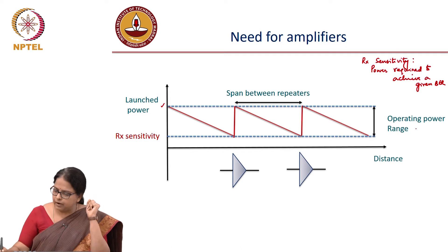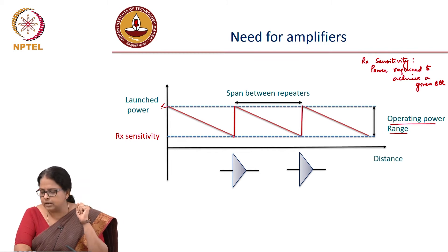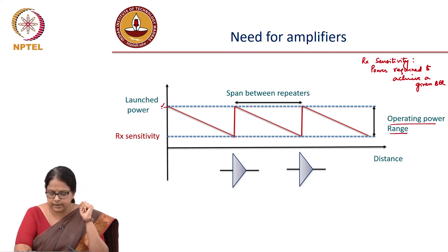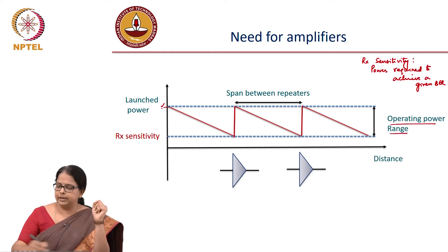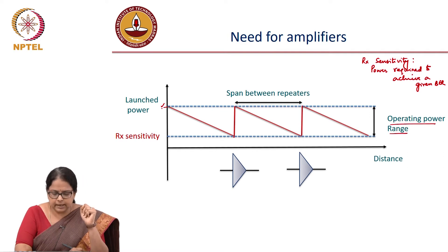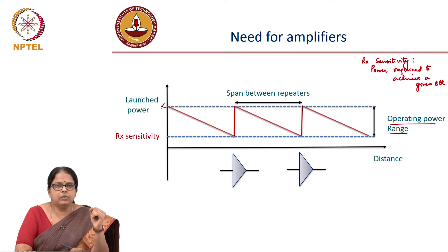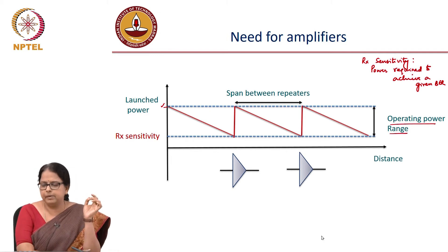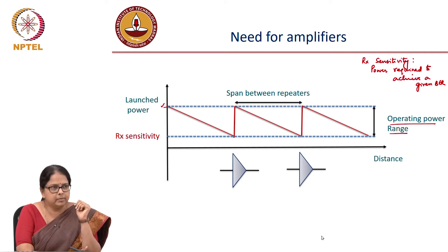The range of operating power is decided by the largest power that you can launch into the fiber, while the lower limit is decided by the receiver sensitivity. What decides the largest power you can launch into the fiber? That is decided by fiber nonlinearity, which we said we are going to discuss later. For now, understand that fiber nonlinearity limits the amount of power you can transmit at the beginning of the fiber — the nonlinear threshold sets the upper limit and receiver sensitivity sets the lower limit.